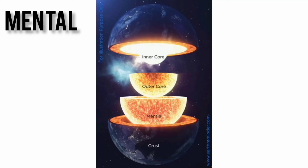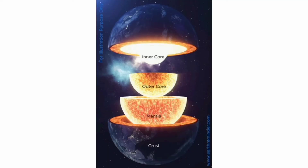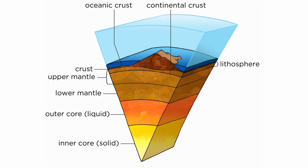Mantle. The mantle is the layer of the Earth right below the crust. It is made of oxygen, silicon, and heavier elements such as magnesium. It is known as SIME. It is the most massive layer of the Earth and forms 84 percent of the Earth. It has a temperature of 1000 degrees Celsius, and the mantle itself is divided into four layers.